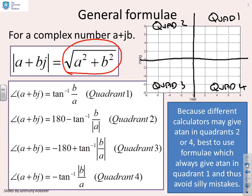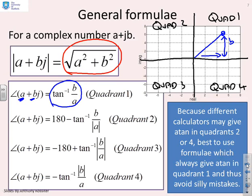In quadrant 1, both a and b are positive, so you can use the straightforward formula: tan⁻¹(b over a). Everything is simple in quadrant 1.